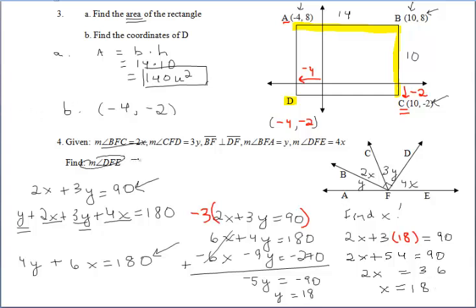And we want to find the measure of angle DFE. Well, angle DFE is represented by 4x. So we can substitute 18 in for x. We get that the measure of angle DFE is 72 degrees. And that's it.